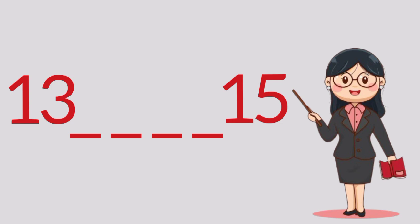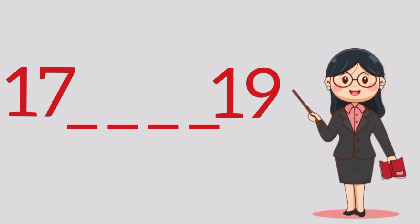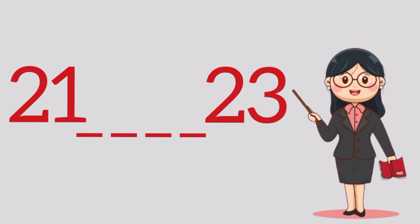What number comes between 13 and 15? It's the number 14. What number comes between 17 and 19? It's the number 18. What number comes between 21 and 23? It's the number 22.